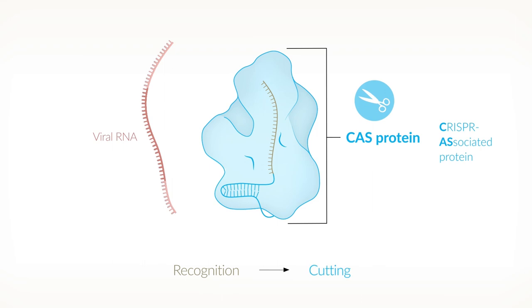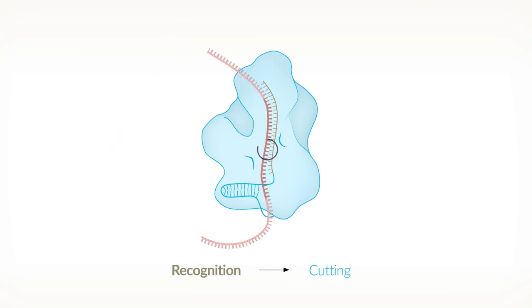To execute their function, the CRISPR-RNA and the Cas protein elements need to stick to one another. The CRISPR-RNA binds to the matching sequence in the viral RNA and the protein cleaves the bond between two adjacent RNA bases in the viral RNA strand.